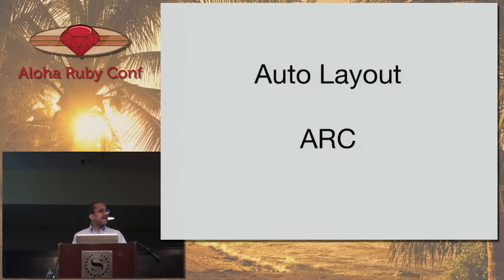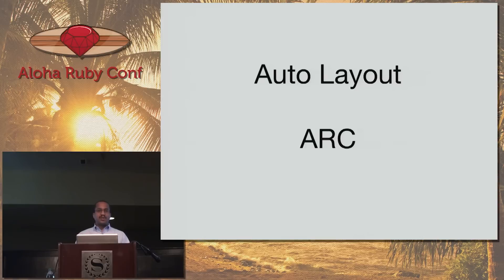ARC — automatic reference counting — was introduced in Xcode 4. Bottom line: we no longer have to do memory management if we're writing apps in Objective-C. RubyMotion uses something very similar to ARC — it doesn't use ARC itself, but you don't have to do explicit memory management with RubyMotion either.